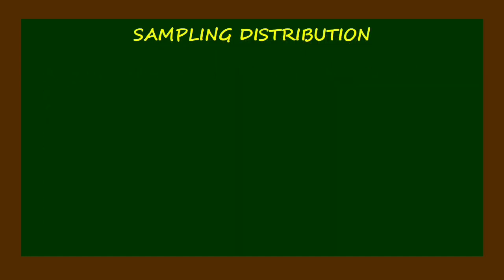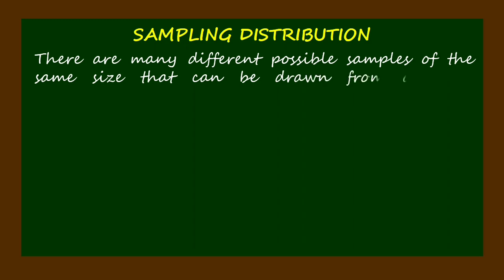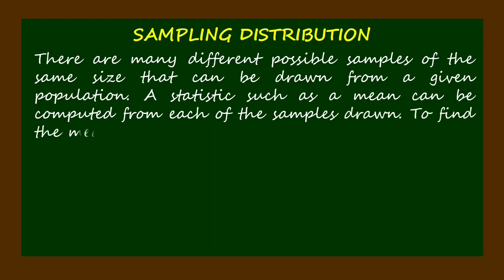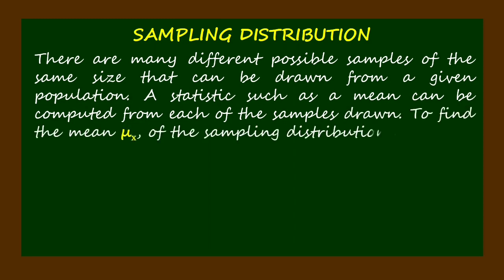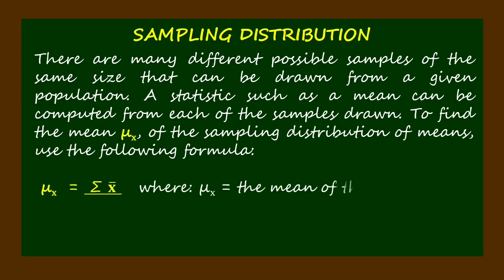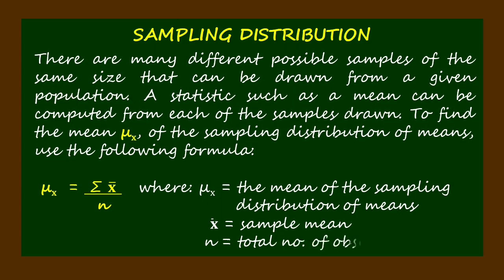For further discussion of sampling distribution: there are many different possible samples of the same size that can be drawn from a given population. A statistic such as a mean can be computed from each of the samples drawn. To find the mean mu sub x of the sampling distribution of means, use the following formula: mu sub x is equal to the summation of the sample mean bar x divided by the total number of observations n.